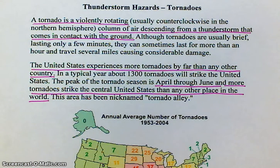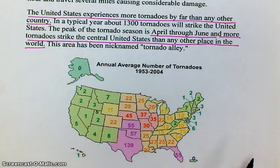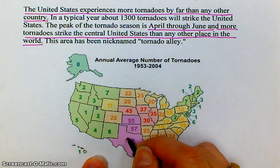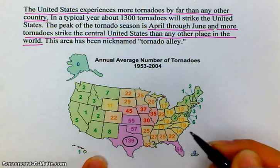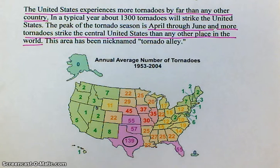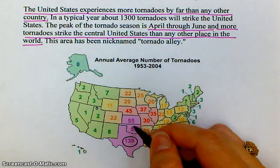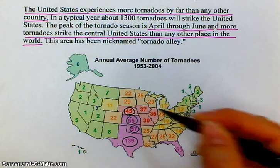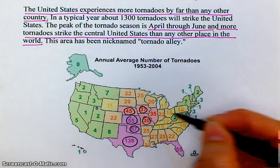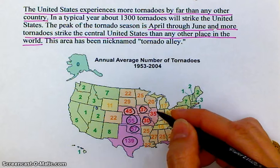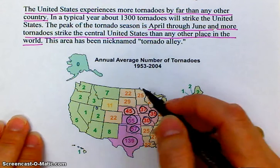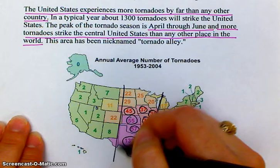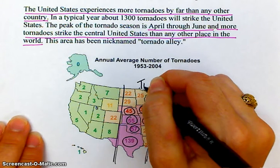Looking at the map, Texas has the most tornadoes, but Texas is a relatively large state — on average about 139. Oklahoma averages 57, Kansas 55, Nebraska 45, and then Missouri, Iowa, and Illinois before it kind of diminishes. This area of the country is known as Tornado Alley.